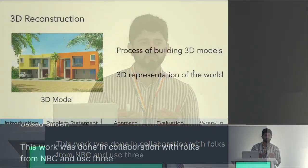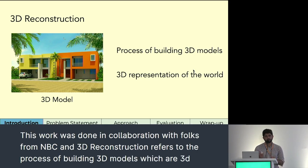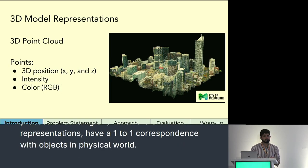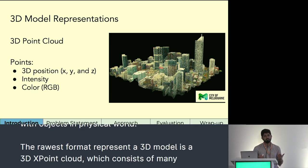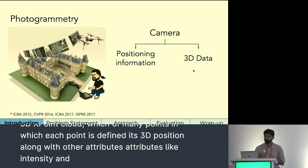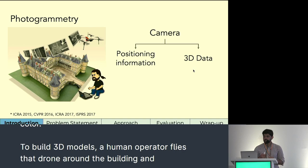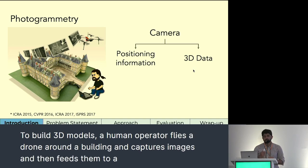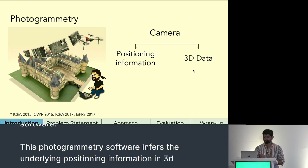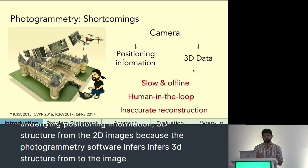3D reconstruction refers to the process of building 3D models which are 3D representations that have a one-to-one correspondence with objects in the physical world. The rawest format to represent a 3D model is a 3D point cloud, which consists of many points where each point is defined by its 3D position along with other attributes like intensity and color. To build 3D models, a human operator flies a drone around a building, captures images, and feeds them to a photogrammetry software, which infers the underlying positioning information and 3D structure from the 2D images.